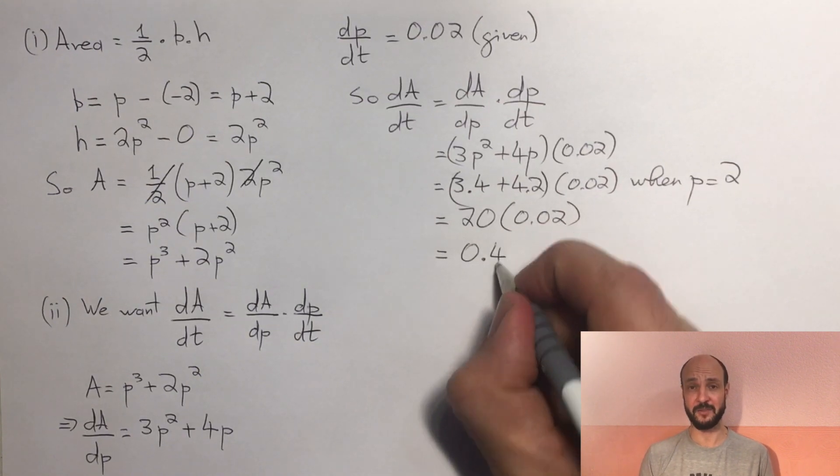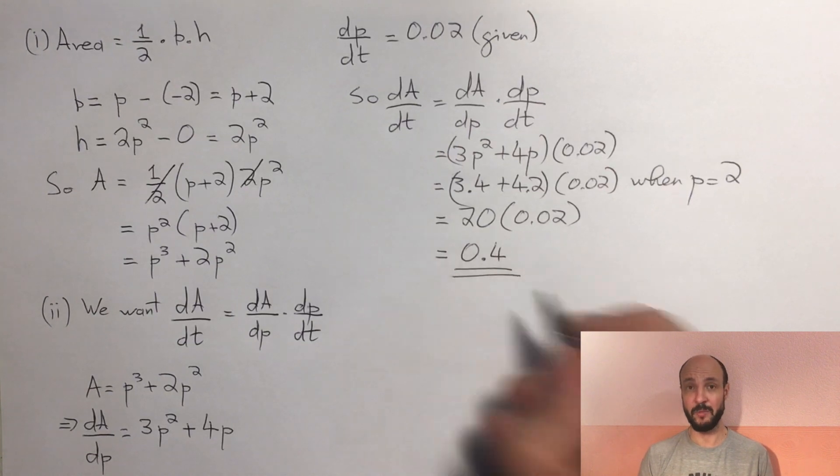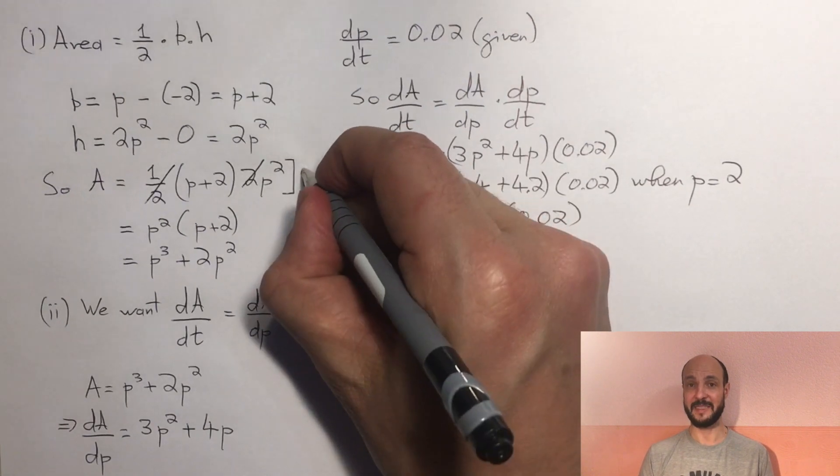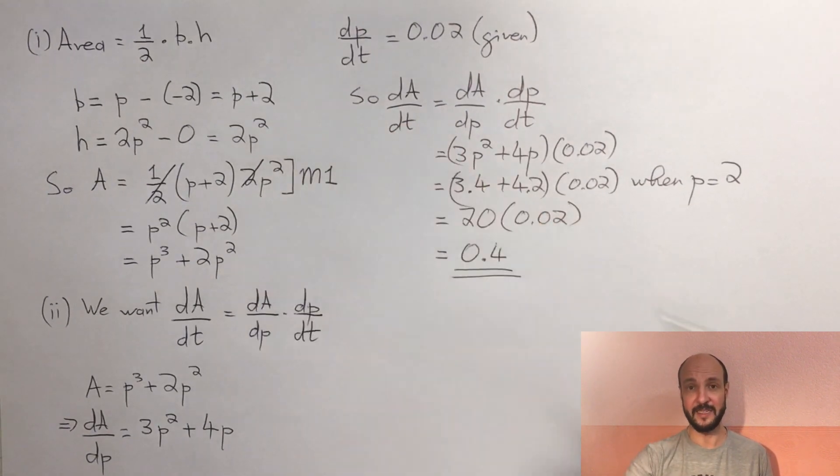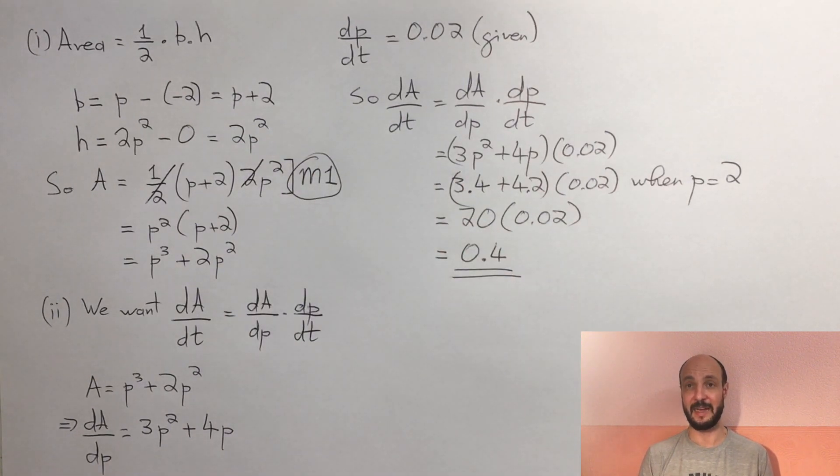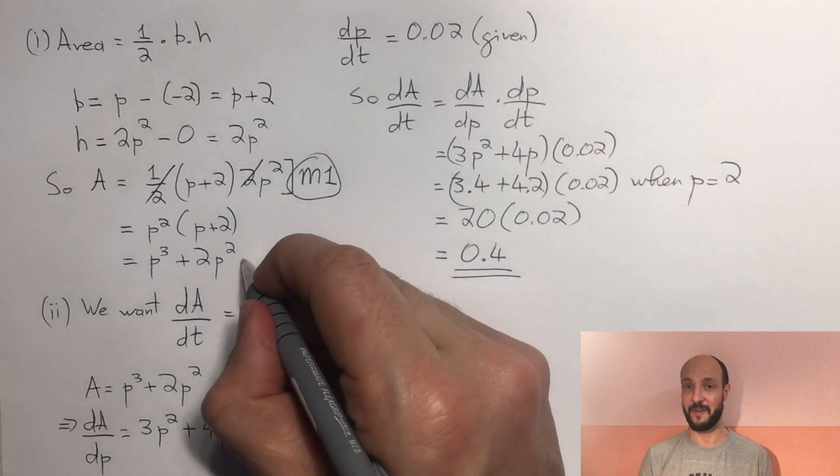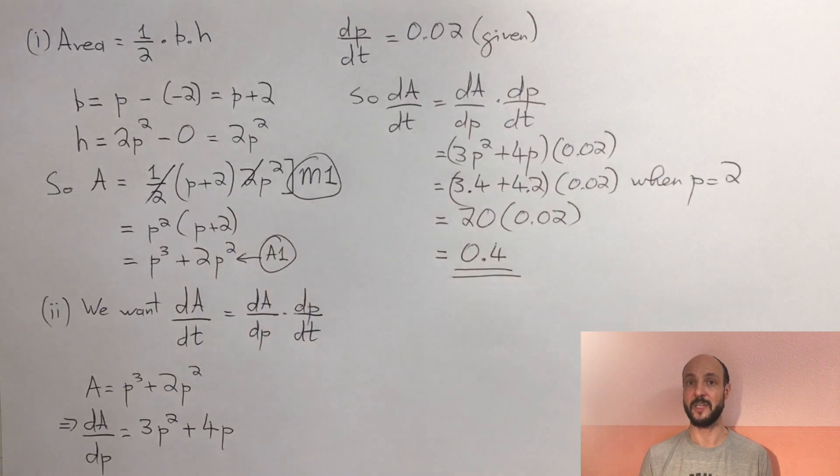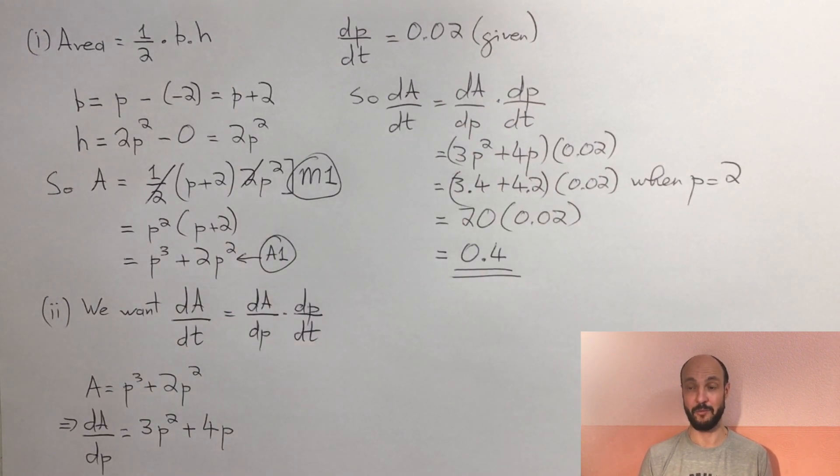Let's think about how the marks are assigned on this question. There are two marks on the first part of the question. One method mark for using the formula half base times height. That doesn't mean just writing the formula down, but that means attempting to put the information you're given into that formula, even though it may not be completely accurate. And then you get a second accuracy mark for getting the final answer of p squared times p plus 2, or p cubed plus 2p squared, depending on how you wrote it.